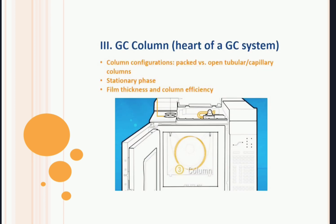The GC column is the heart of the GC system. Packed columns or capillary columns are widely used for gas chromatography. In this column, the stationary phase is filled. Columns are spiral; their length ranges from around 5 meters to 50 meters, variable according to the instrument, and the diameter is in centimeters.